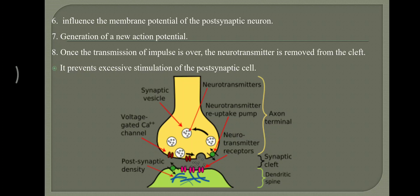Once the transmission of impulse is over, the neurotransmitter must be removed from the cleft and from the receptor. This prevents excessive stimulation of the post-synaptic cell.